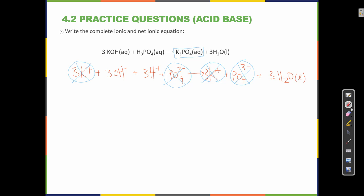So after we remove the spectators, we rewrite what's left, put the positive ion first. 3H+ plus 3OH- makes 3H2O liquid.